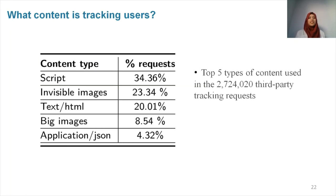Next, we want to understand what kind of content is used to track users. We started our study using invisible images to detect tracking behaviors and make the classification, but then we applied this classification to the full dataset with all kinds of content. In this table, we present the top five content types used with these tracking requests. As you can see, not only invisible images are used, but also HTML files and scripts that could be really useful for the good functioning of the website.